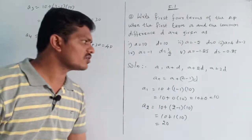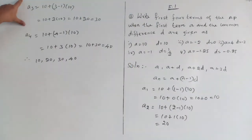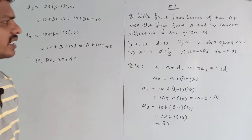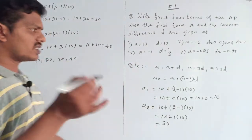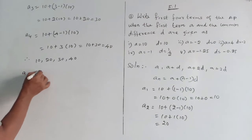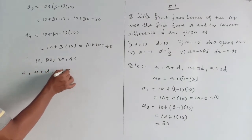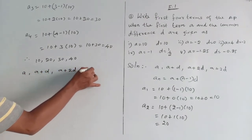You can use the formula for 2 marks. For 1 mark questions, you can directly use the general form: A, A plus D, A plus 2D, A plus 3D. This is the general form — first term, second term, third term, fourth term.